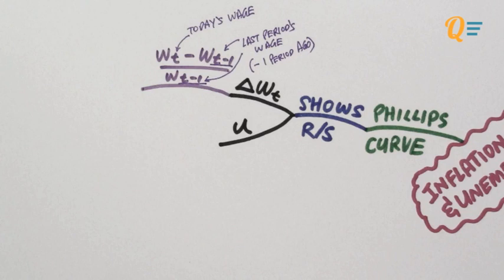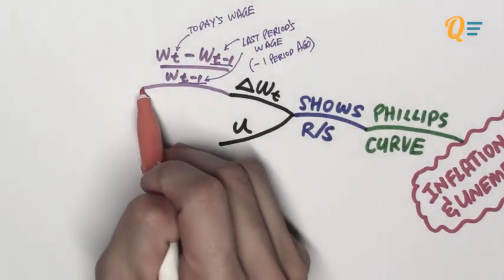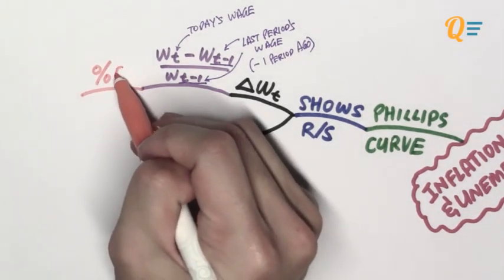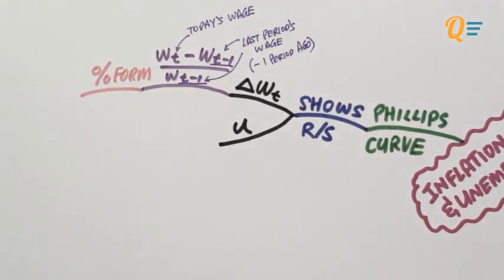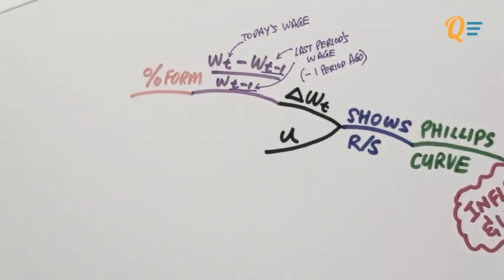If you have some background in statistics, you will know that this is called time series. You're going to be using this a lot when you come to econometrics if you're taking that unit in the second year. The change in nominal wage is usually represented in percentage form.